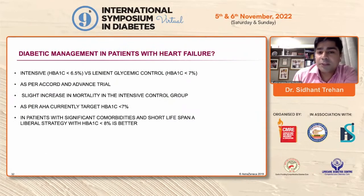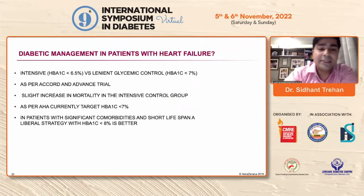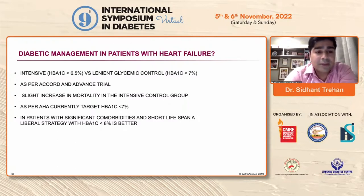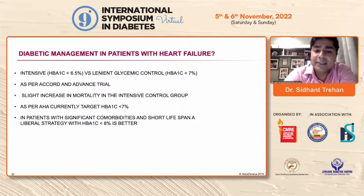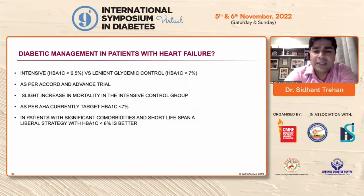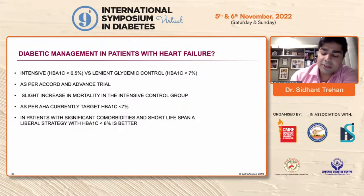What about diabetic management in patients with heart failure? We can have two strategies: the intensive strategy with a target HbA1c less than 6.5%, or a linear glycemic control strategy with HbA1c less than 7%. As per the ACCORD trial and ADVANCE trial, there was a slight increase in mortality in the intensive control group. Currently, as per the AHA, the target HbA1c for heart failure patients is 7%. In patients with significant comorbidities and short lifespan, a liberal strategy with HbA1c less than 8% is better.